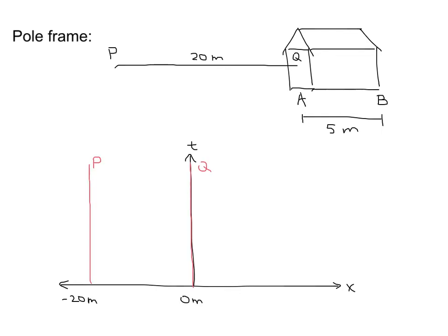In terms of the diagram, this time, Q will not be moving. It will be staying at position 0 meters and moving forward in time. And P will be staying at position negative 20 meters and moving forward in time.